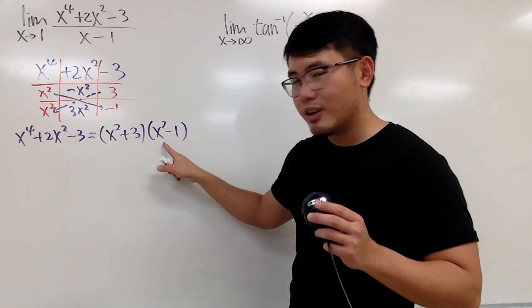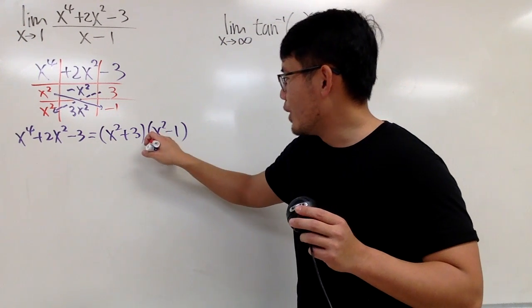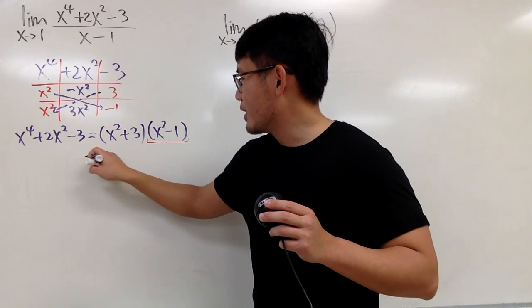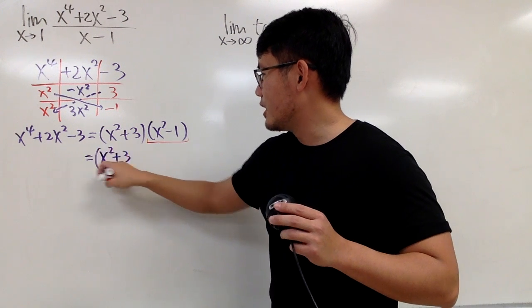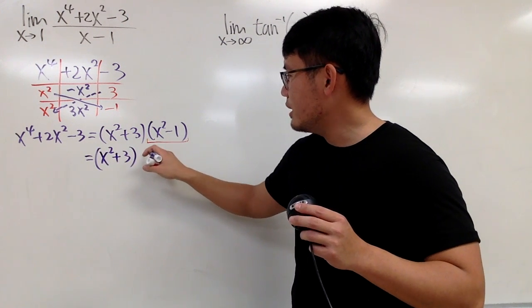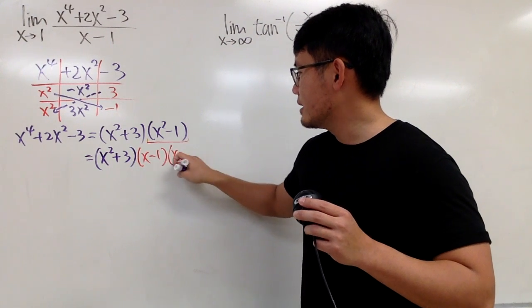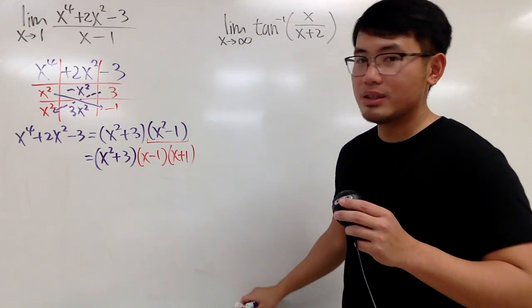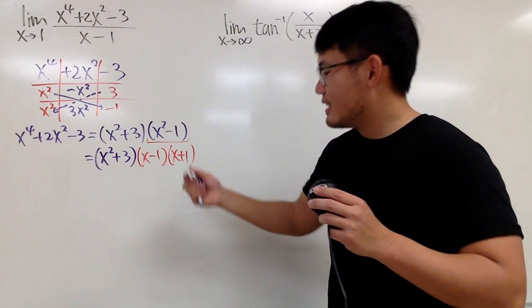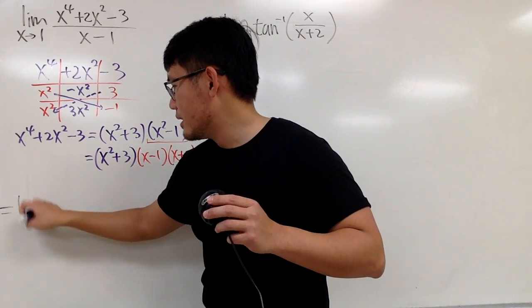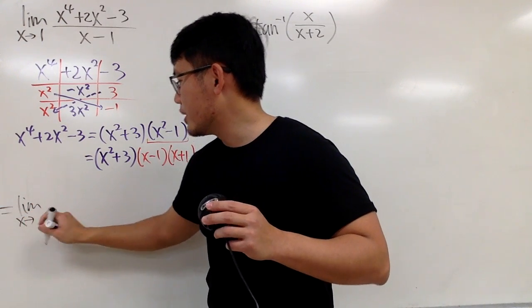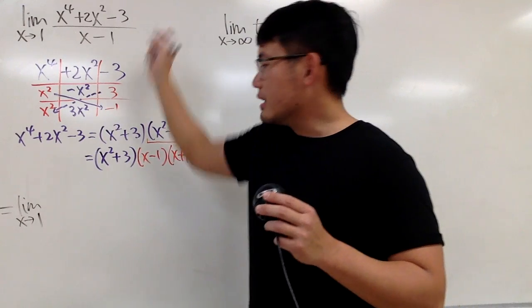All right, so what does this mean? Let me just write this down. x to the fourth power plus 2x squared minus 3. This right here is equal to, you read this from left to right, across for the answer part. You get x squared plus 3 times x squared minus 1.